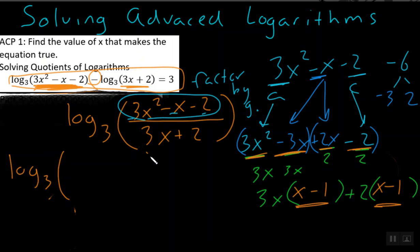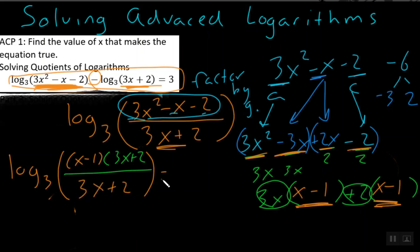Log base 3, big parentheses, and over here, I have my x minus 1, and I have my remaining factor, which is going to be 3x plus 2, all over this original quantity on the bottom, 3x plus 2 is equal to 3. Alright, now at this point, we know that when we have factors on the top and bottom that are the same, they both reduce to 1, and we're left with this. Log base 3 of x minus 1 is equal to 3.